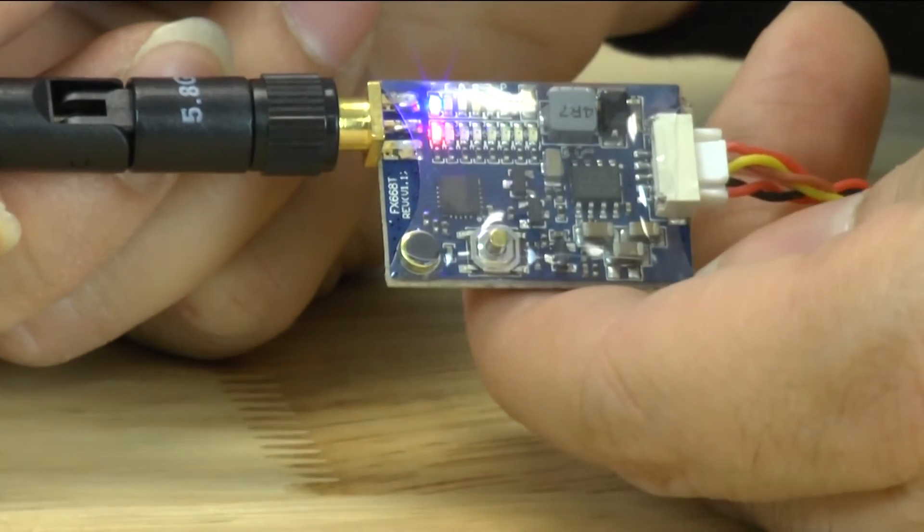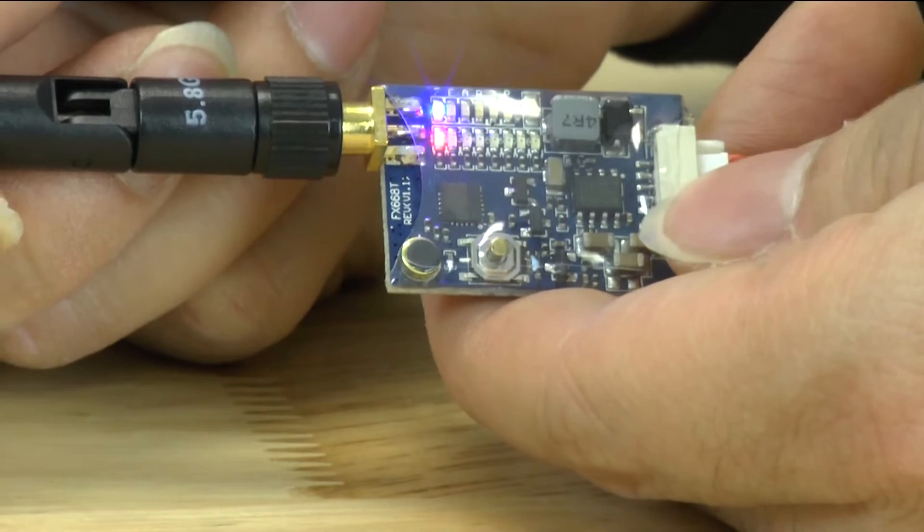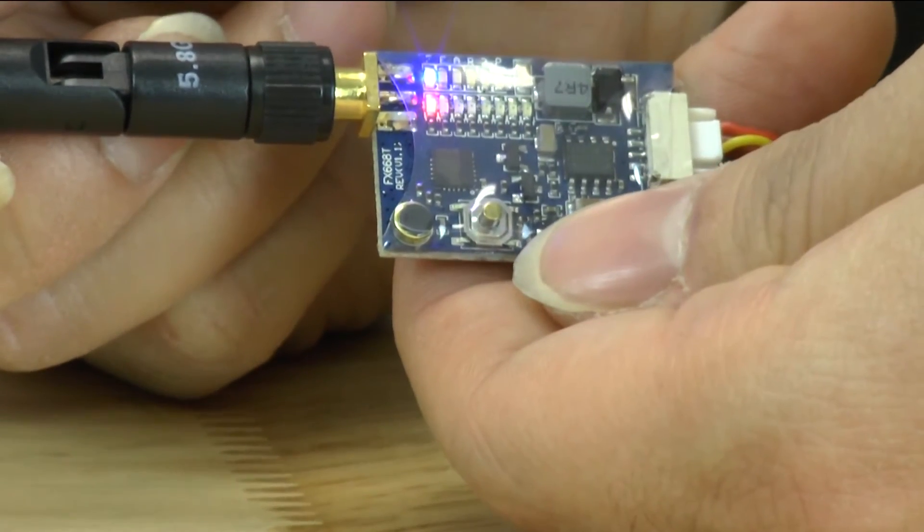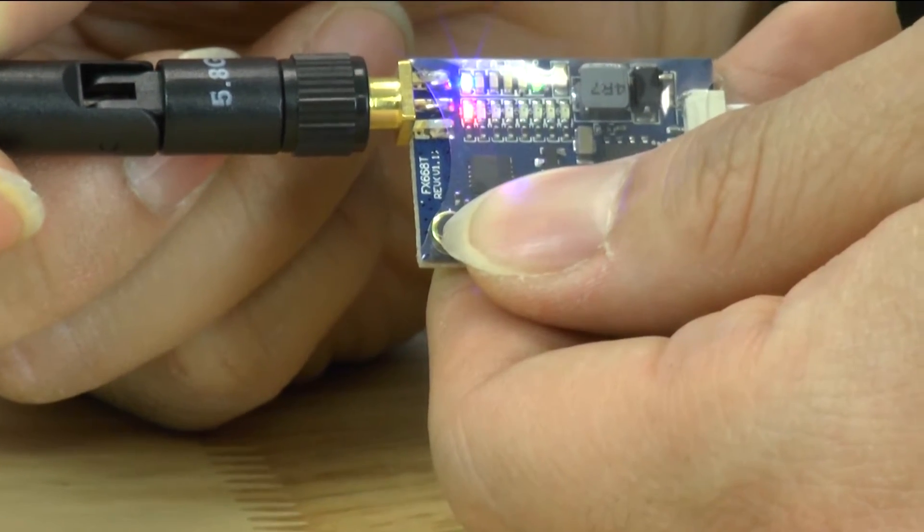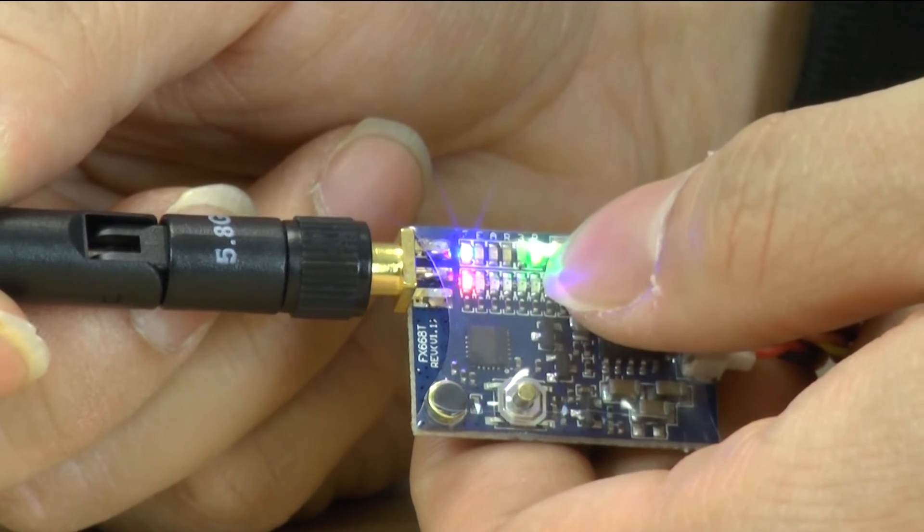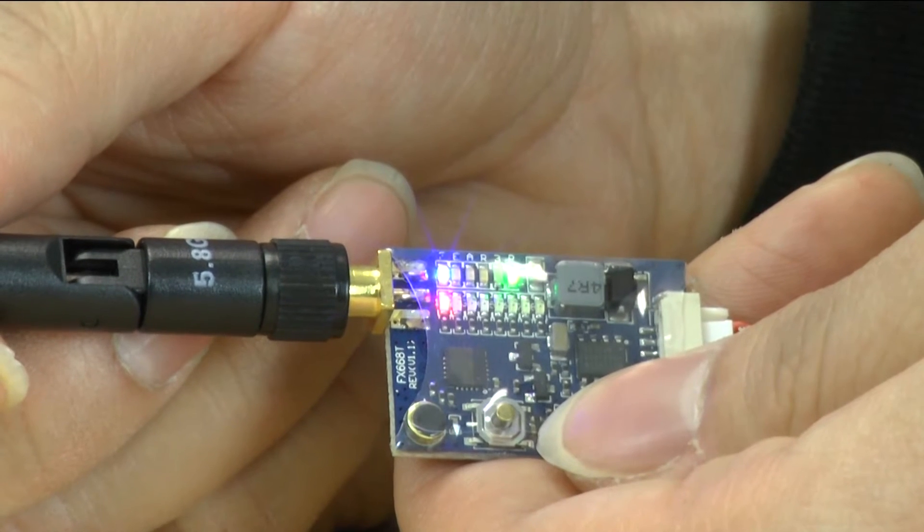Now what's different about this VTX is that it actually doesn't start broadcasting video until a green LED comes on. And to turn on the green LED to start broadcasting video you go ahead and push down the button and hold it. Once you hold it for about two to three seconds this green LED will turn on. This means that this VTX is now broadcasting video.